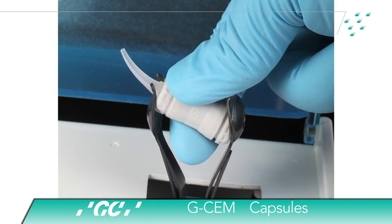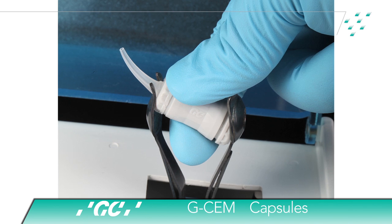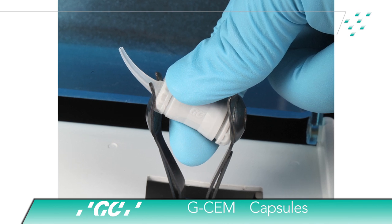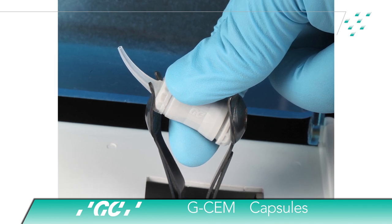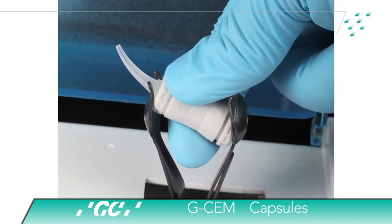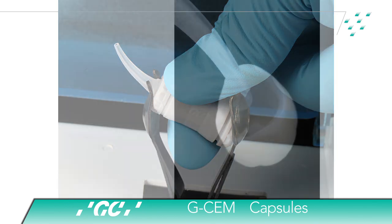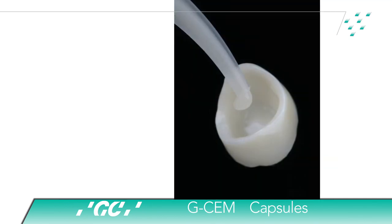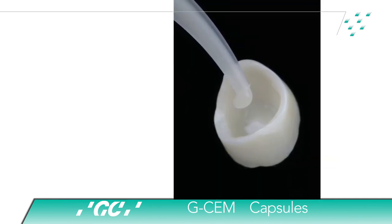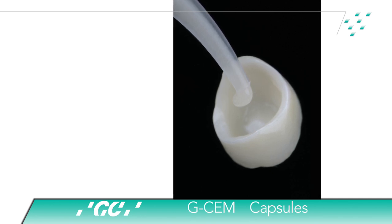Remember, when using a rotational mixing device, it is recommended not to use the centrifuge option. Extrude the self-adhesive cement GCM into the restoration and coat the internal surfaces, then seat immediately while maintaining moderate pressure.